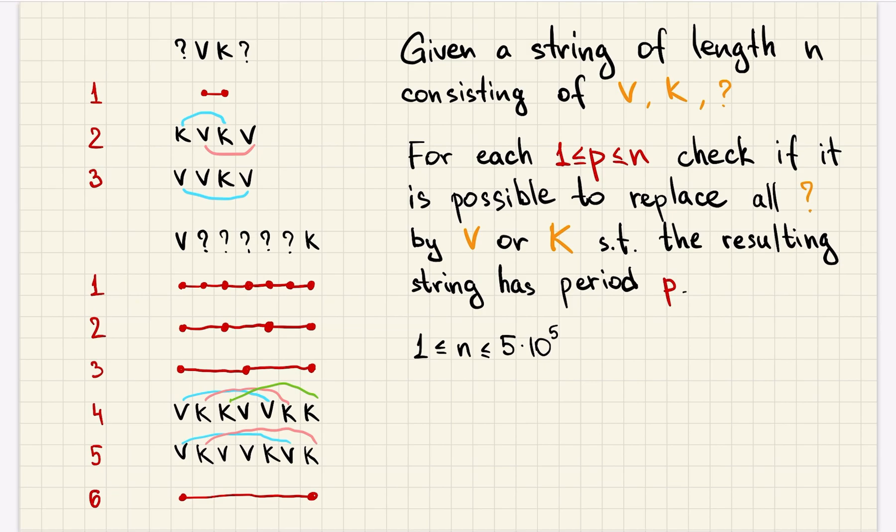For each p from 1 to n, we have to check if it is possible to replace all the question marks by characters v or k such that the resulting string has period p, and n is up to 500,000.